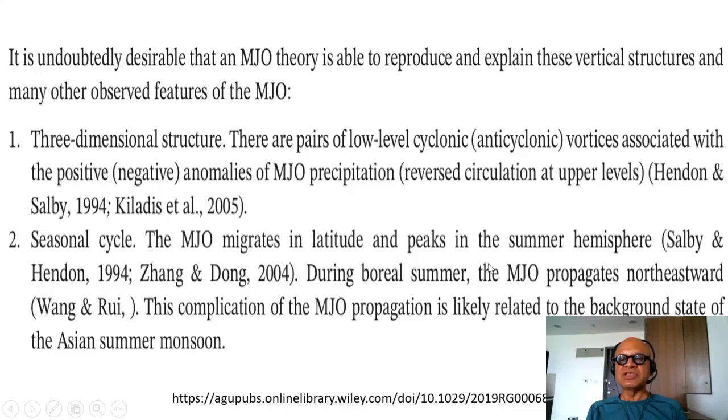MJO migrates in latitude and peaks in the summer hemisphere. During boreal summer, the MJO propagates northeastward. This complication of MJO propagation is likely related to the background state of the Asian summer monsoon. Here again, there are some details where not everybody believes that summer inter-seasonal oscillations are the same as MJOs and whether they originate in the western north tropical Pacific and emanate as Rossby waves which are shifted northward by the background circulation of the summer monsoon or whether they are originating in the western Indian Ocean and propagating eastward but getting detoured northward. And the seasonality in terms of what happens during events like El Nino.